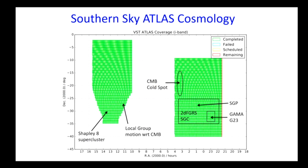This makes the case for the south: even if there were no other interest than doubling the sky area covered, there's still a lot of interesting cosmological aspects to southern-sky astronomy. The local group's dipole motion with respect to the CMB moves in this direction, encompassing the Shapley Supercluster and the ATLAS area — possibly one of the sources of that dipole. We also have the 2dF Galaxy Redshift Survey, the CMB cold spot, and the gamma g23 field — all of interest for extragalactic astronomy.